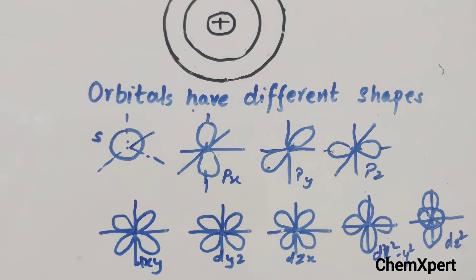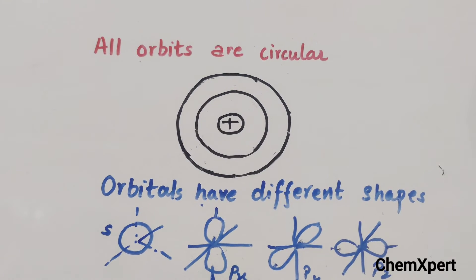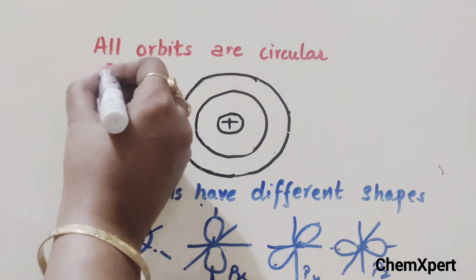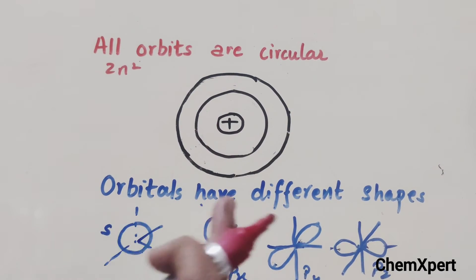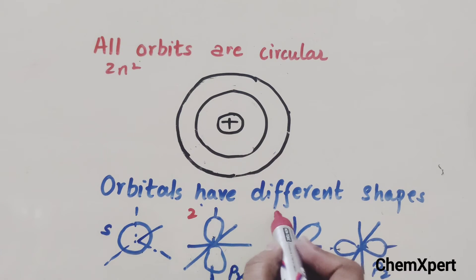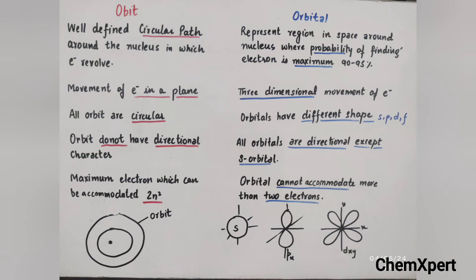In an orbit, a maximum of 2n² electrons can be accommodated, whereas in each orbital, a maximum of only two electrons can be present. So the first basic difference is about the nature: orbits have a circular path, whereas an orbital is a region or space around the nucleus where the probability of finding the electron is maximum.